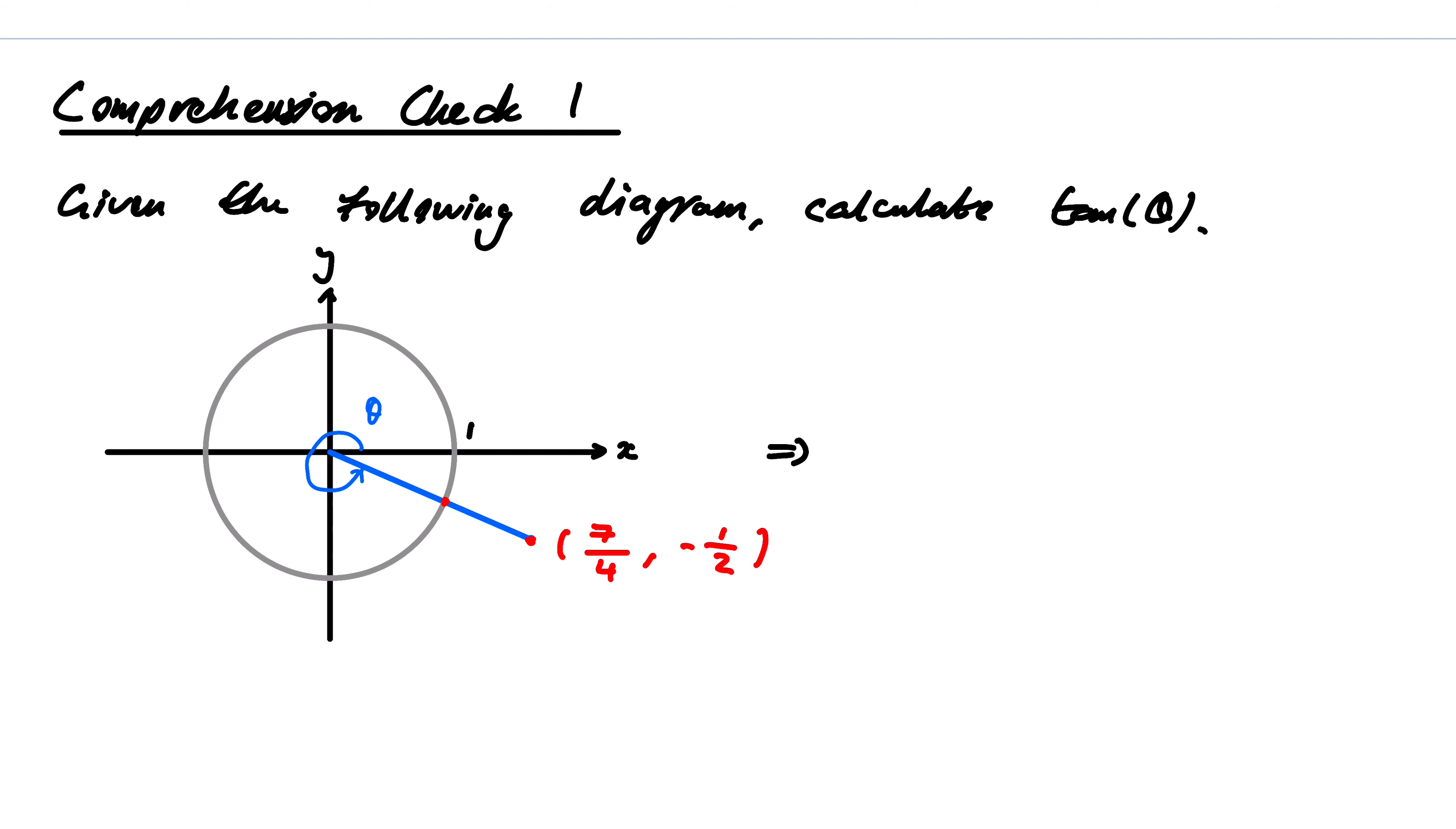This would imply that tan of theta is equal to the slope of the blue line, which is rise over run. It'd be minus 1 half minus 0, divided by 7 over 4 minus 0. So this is just my usual y2 minus y1, divided by x2 minus x1.